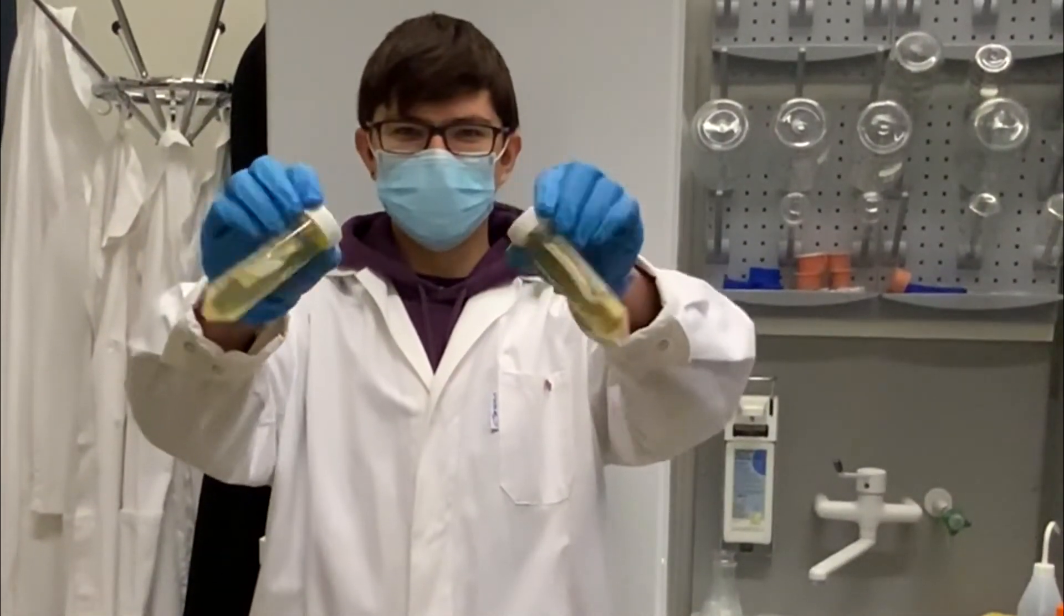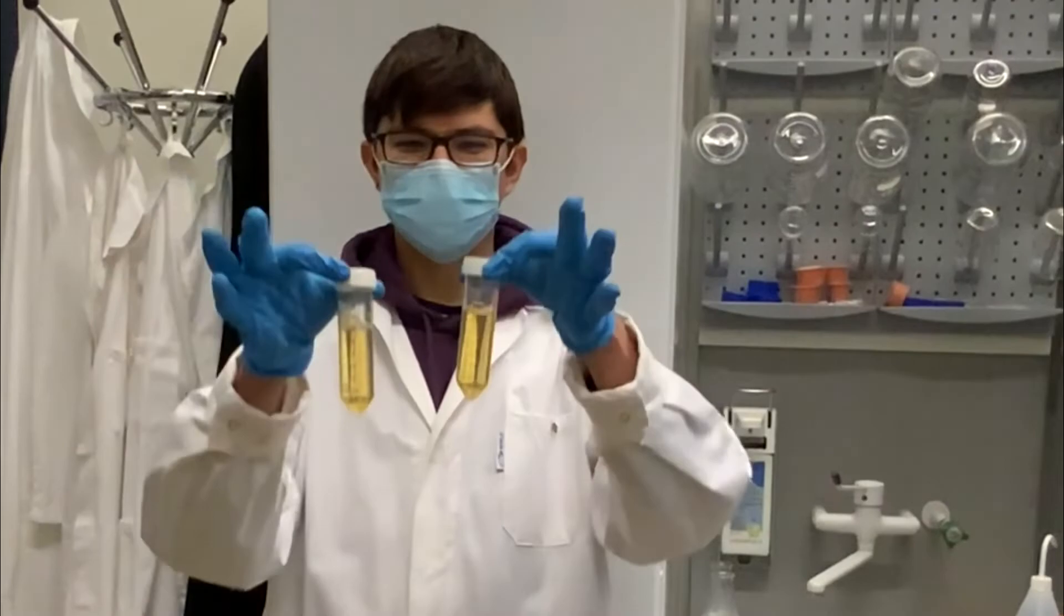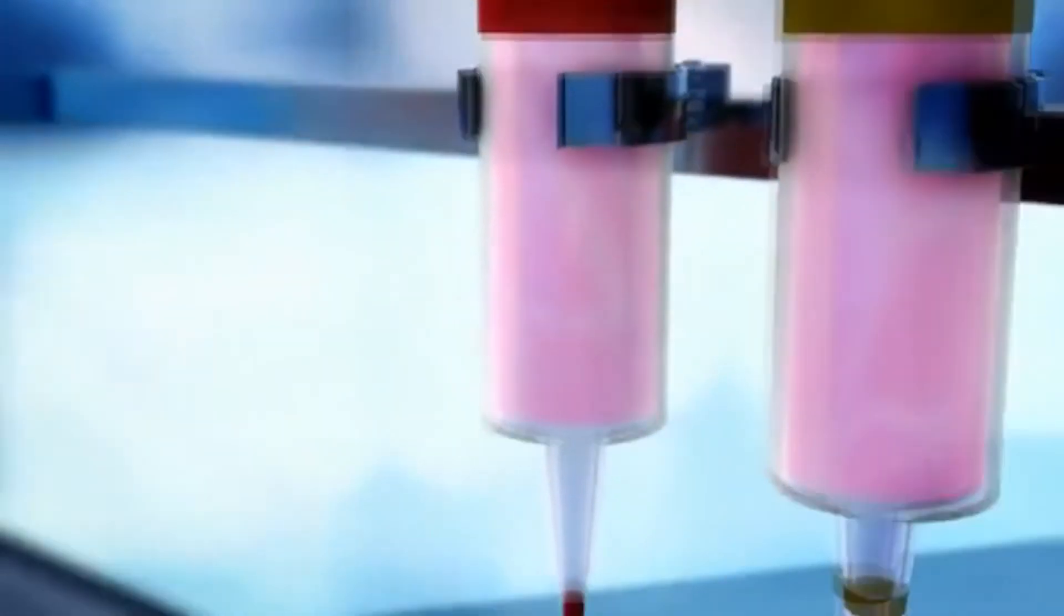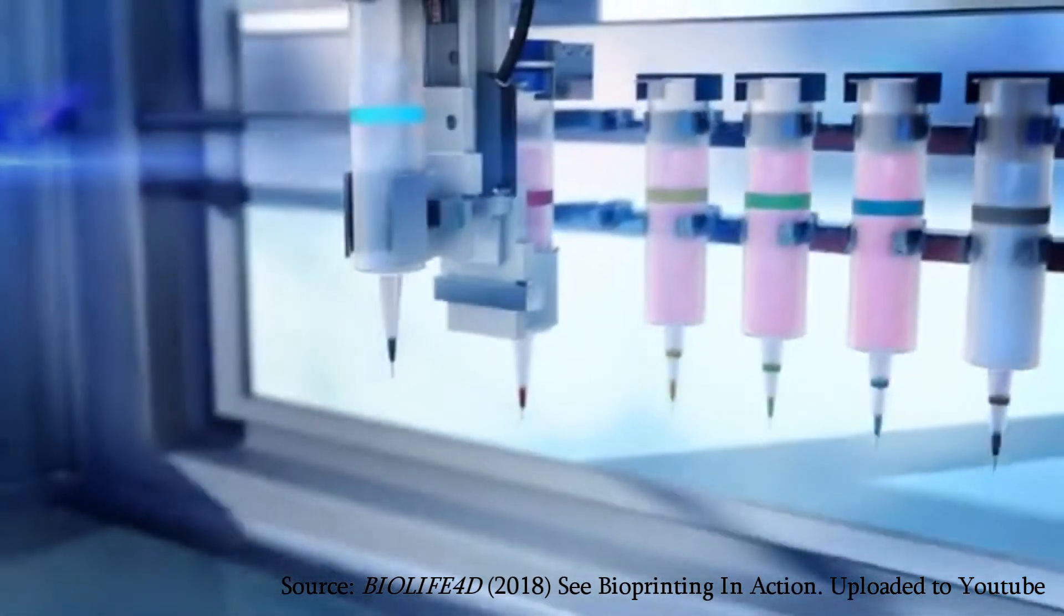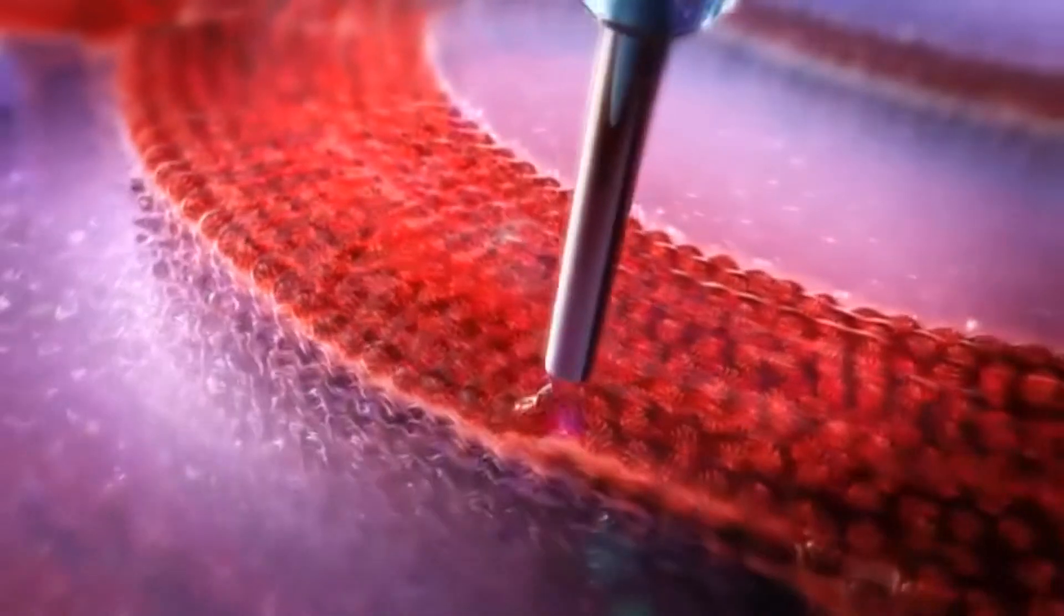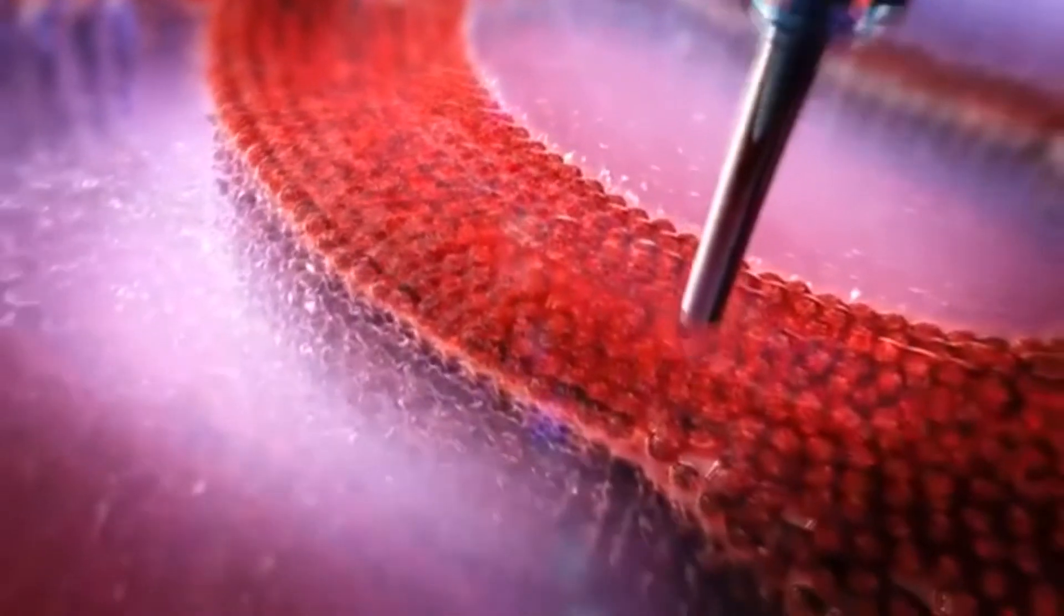An interesting application of pluronic gels can be found in bioprinting, where a biological ink is used to 3D print organic materials. This bioink consists of different types of cells. A bioprinter then aligns the cells one layer at a time, following data from an MRI.